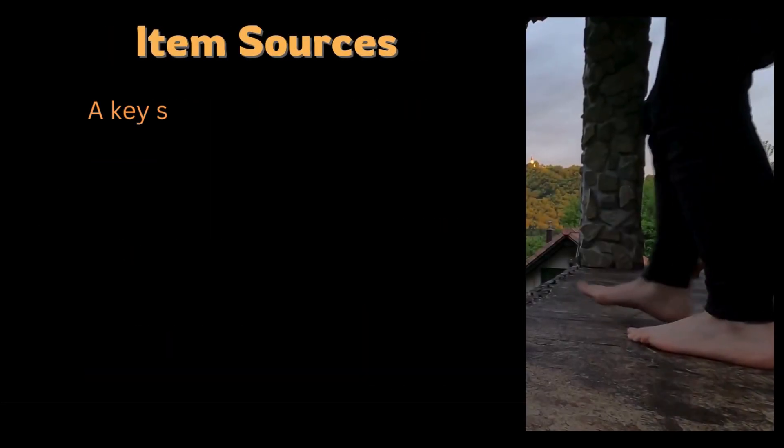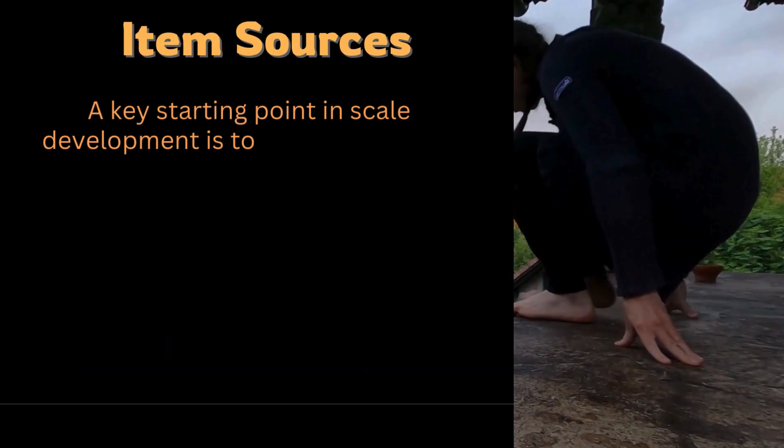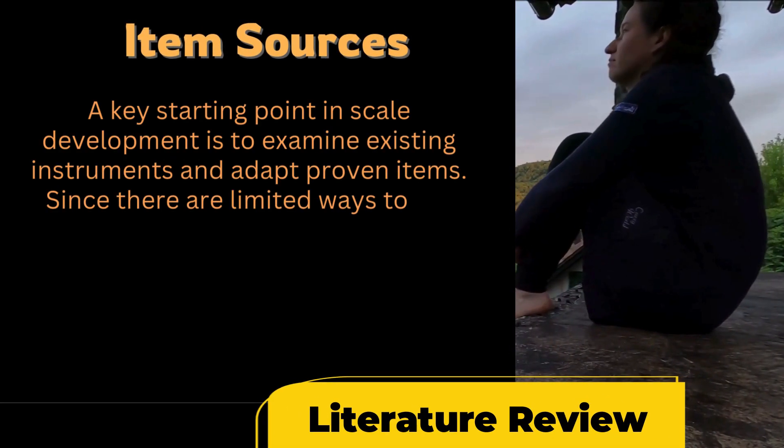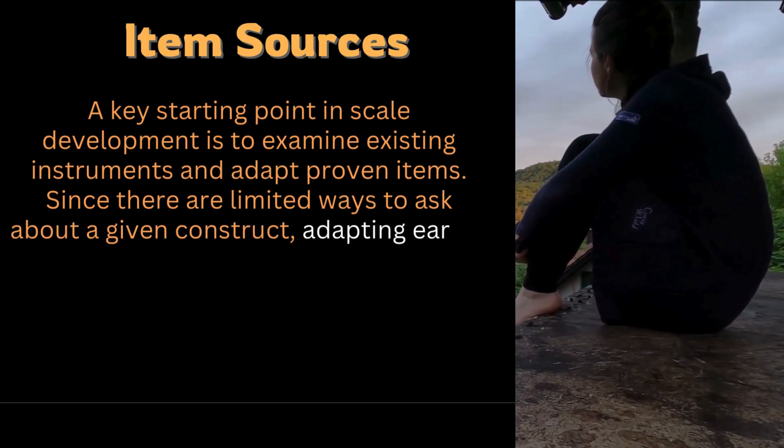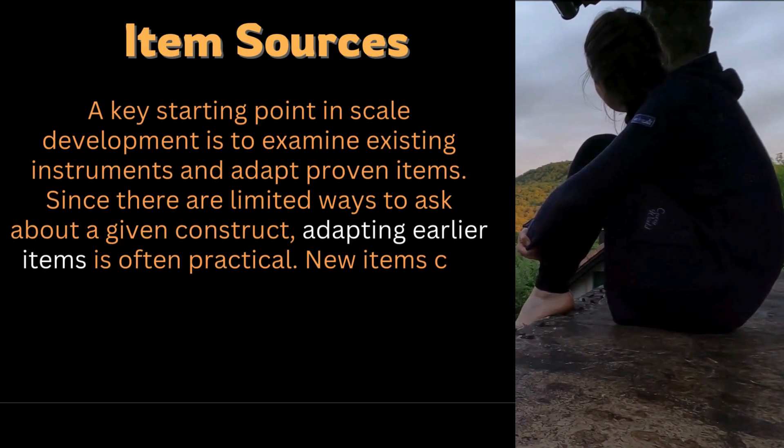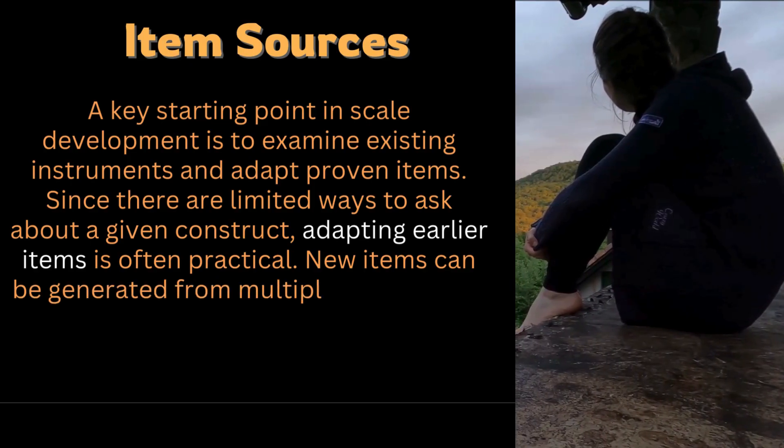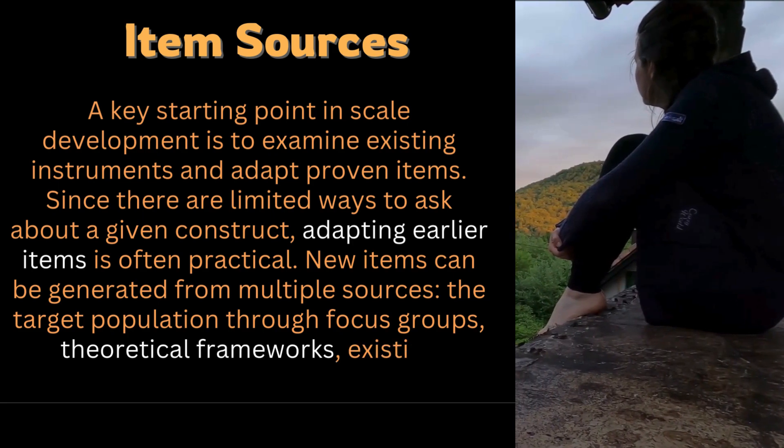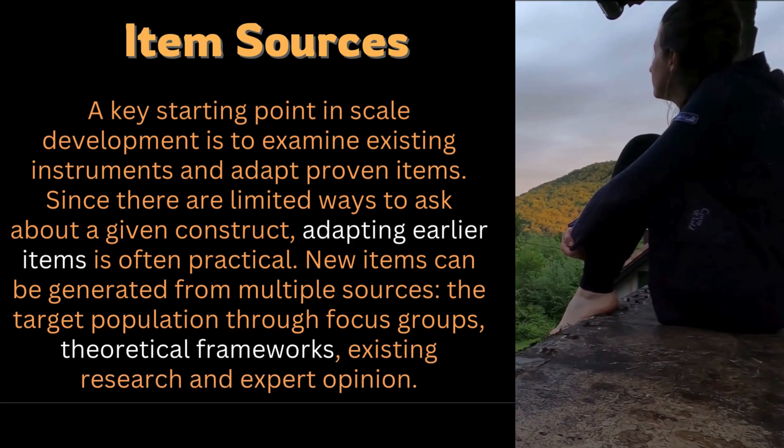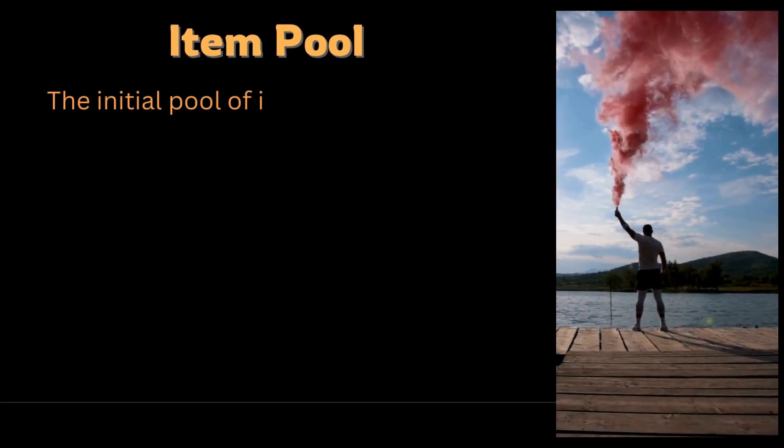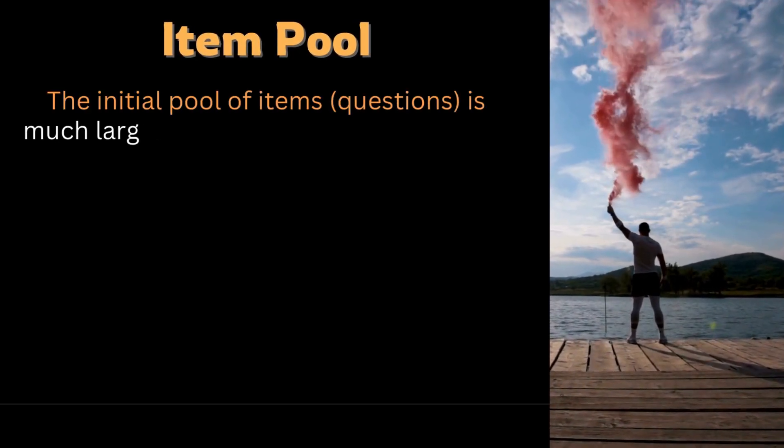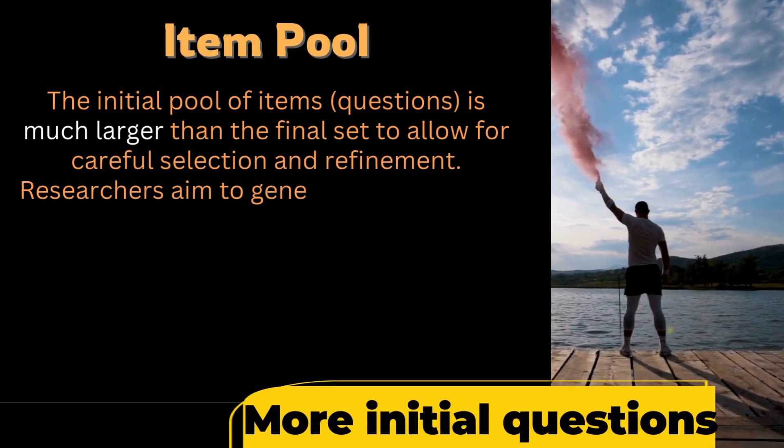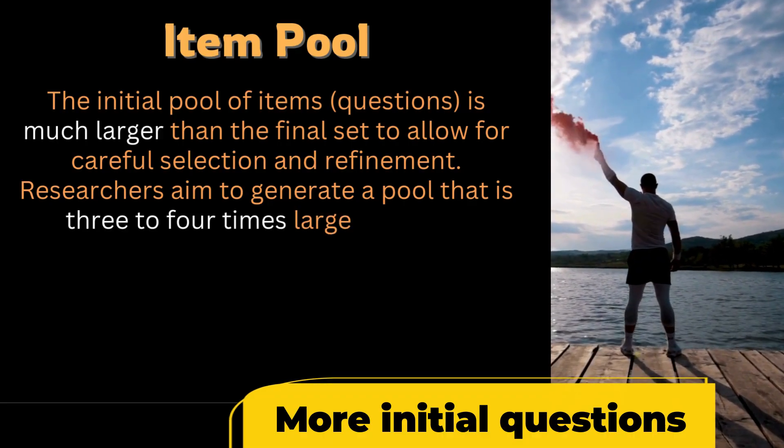A key starting point in scale development is to examine existing instruments and adapt proven items. Since there are limited ways to ask about a given construct, adapting earlier items is often practical. New items can be generated from multiple sources: the target population through focus groups, theoretical frameworks, existing research, and expert opinion. The initial pool of items is much larger than the final set to allow for careful selection and refinement. Researchers aim to generate a pool that is three to four times larger than the expected number of final items.